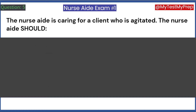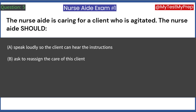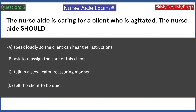The nurse aide is caring for a client who is agitated. The nurse aide should: A. Speak loudly so the client can hear the instructions. B. Ask to reassign the care of this client. C. Talk in a slow, calm, reassuring manner. D. Tell the client to be quiet. Answer: C. Talk in a slow, calm, reassuring manner.